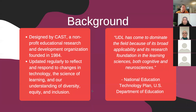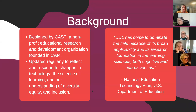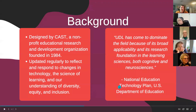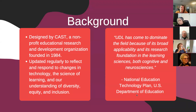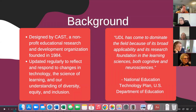UDL is updated regularly to reflect changes in technology, the science of learning, and our understanding of diversity, equity, and inclusion. The most recent update came around 2019–2020. As new research comes out — especially in a field like autism and the autism spectrum — the UDL is adapted to be most responsive to how each student takes in information. As the U.S. Department of Education's National Education Technology Plan notes, it 'has come to dominate the field because of its broad applicability and its research foundation in the learning sciences' — both cognitive and neurosciences.